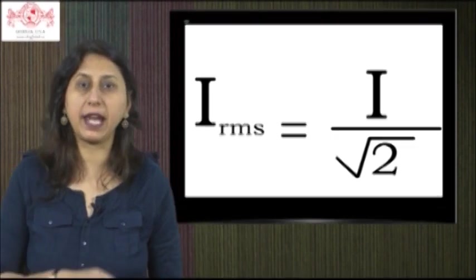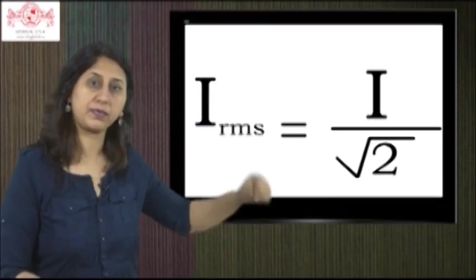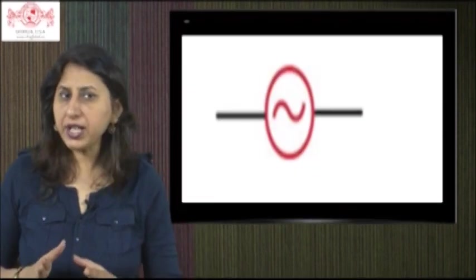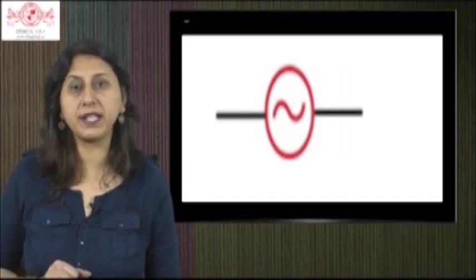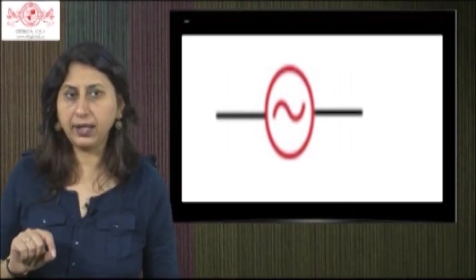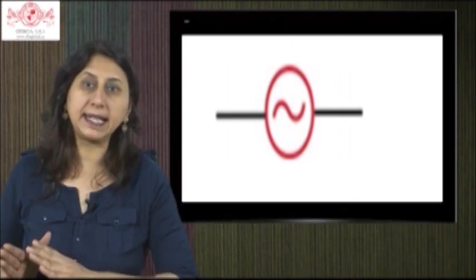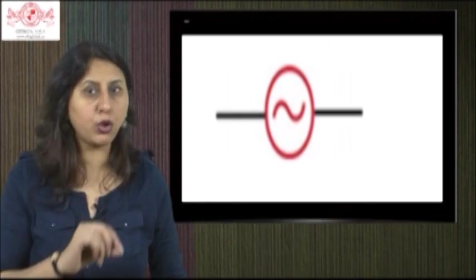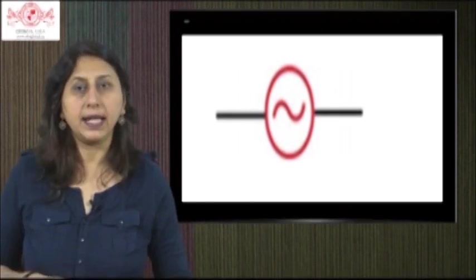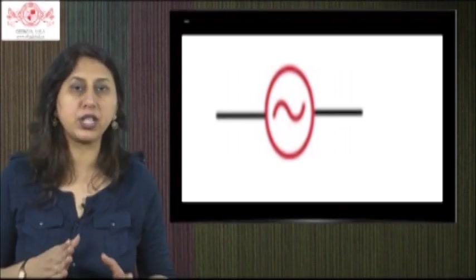AC sources: Changing magnetic flux can induce an EMF according to Faraday's law of induction. In particular, if a coil rotates in the presence of a magnetic field, the induced EMF varies sinusoidally with time and leads to an alternating current (AC) and provides a source of AC power. The symbol for an AC voltage source is shown.